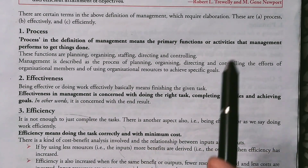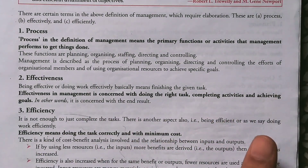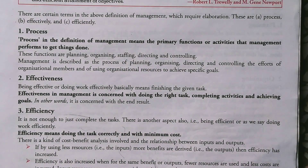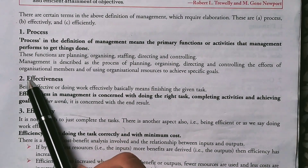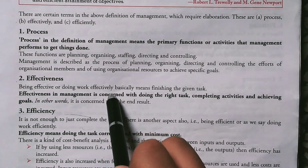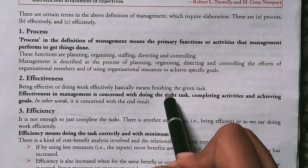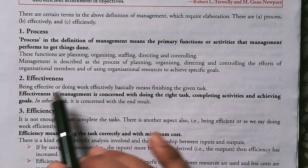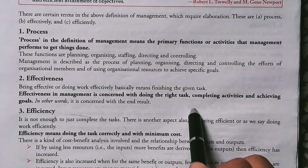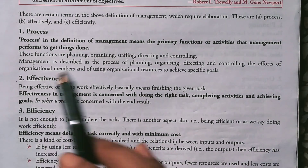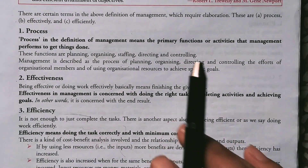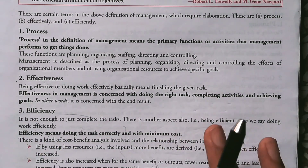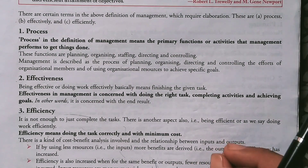What is effectiveness? It is simply to complete your goals. We will not see whether you are taking more time or less time — we will see whether you have completed your objective or not. That is effectiveness. Being effective or doing work effectively basically means finishing the given task. Effectiveness in management is concerned with doing the right task, completing the activities, and achieving goals. It is concerned with the end result.